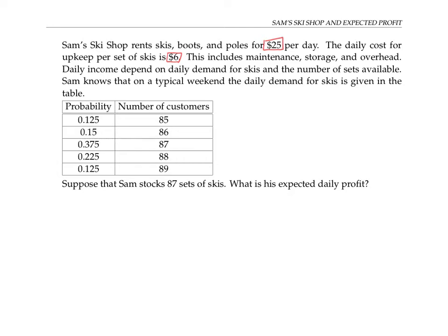Now let's suppose that Sam has 87 sets of skis to rent out. We want to figure out his expected daily profit.